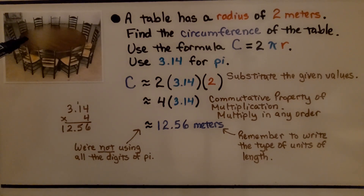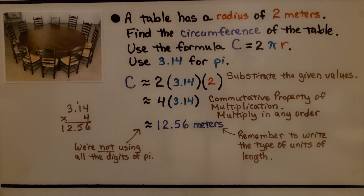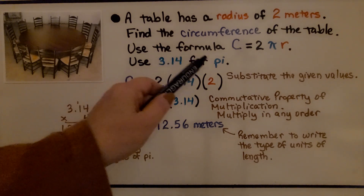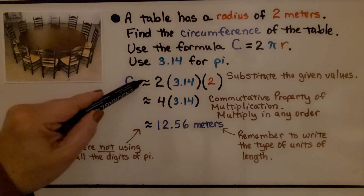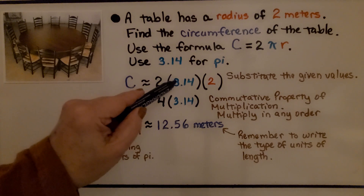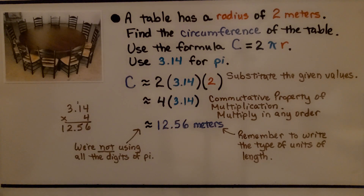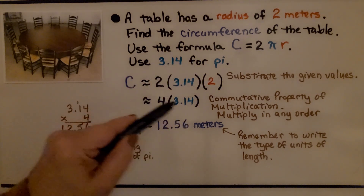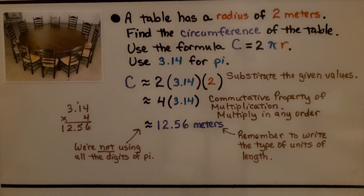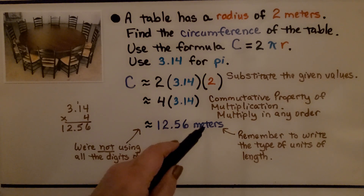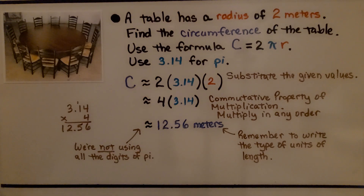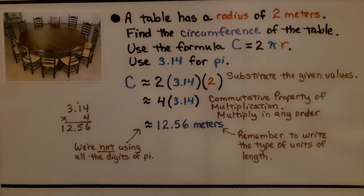A table has a radius of 2 meters. Find the circumference of the table. We're going to use the formula c equals 2πr and use 3.14 for pi. We have c is approximately 2 times 3.14 times 2 when we substitute the given values. We can multiply 2 times 2 to get 4, because the commutative property of multiplication says we can multiply in any order and get the same product. So we have 4 times 3.14, which gives us 12.56. We have to remember to write the units of length, so it's approximately 12.56 meters. Since we're only using 3.14, that's an approximation.